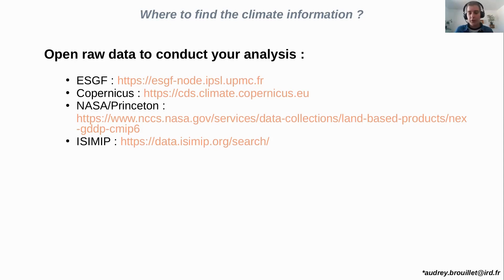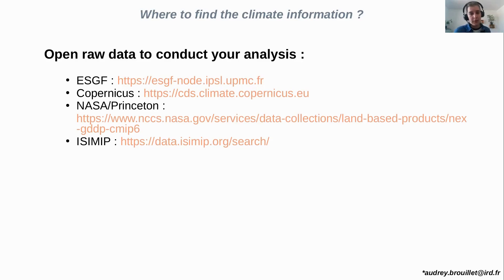So you have temperature, wind, and precipitation simulations over ESGF, and also observations in Copernicus. Copernicus also provides already-calculated climate indices, for example heat wave indices or maximum precipitation indices.